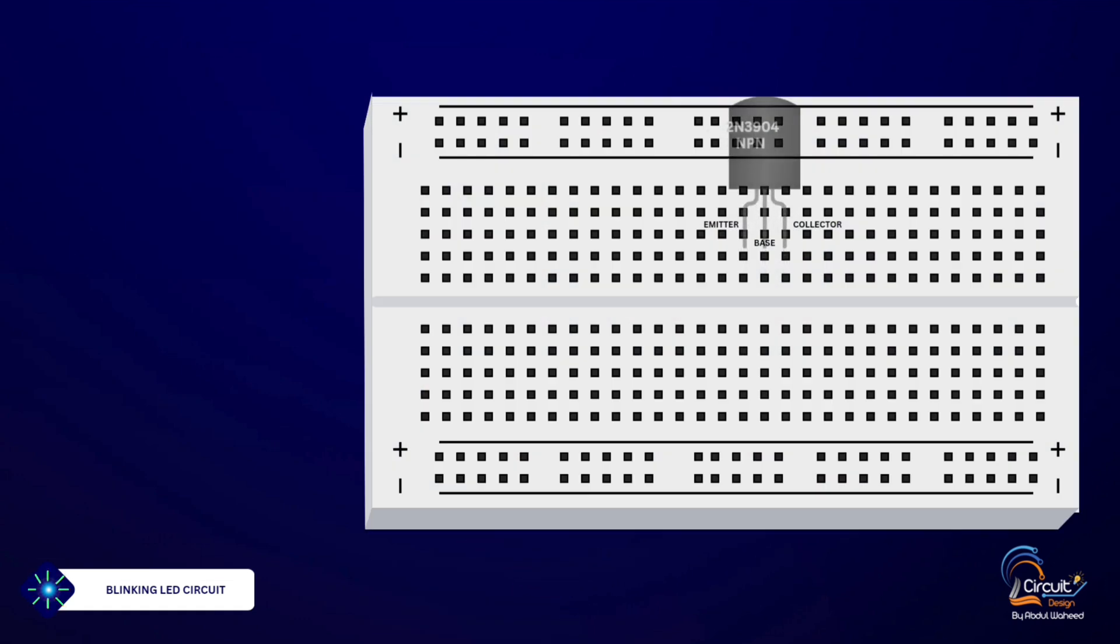First, place the 2N3904 transistor on the breadboard. Connect the emitter to the ground rail of the breadboard.